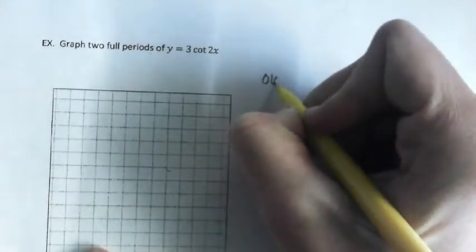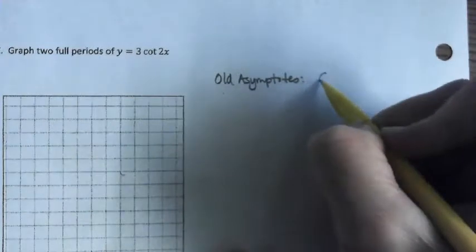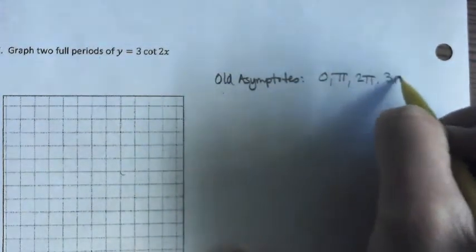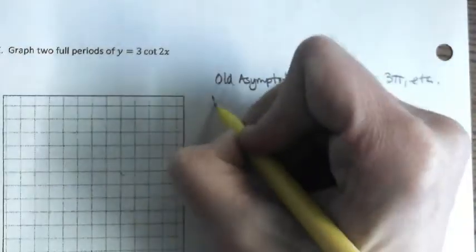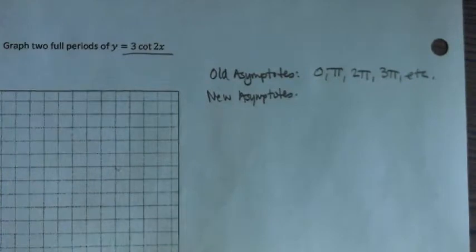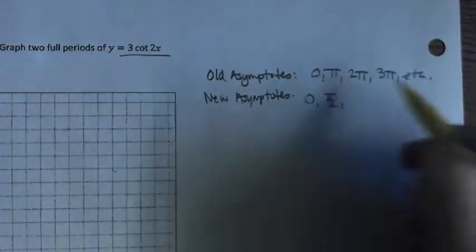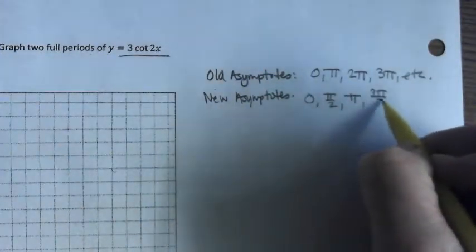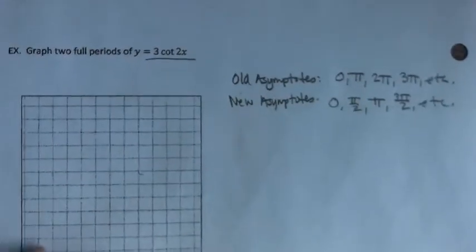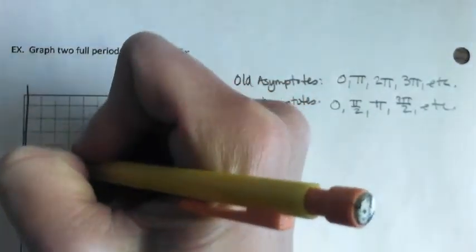Good, any questions there? Okay, for our cotangent graph, I'll start the same way. Our old asymptotes were where? Zero, pi, two pi, three pi, etc., right? Our new asymptotes are where? What is the horizontal stretch or compression that's going to affect our asymptotes? Compression by a half, so we're going to take half of all of these. So zero still zero, pi becomes pi over two, two pi cut in half becomes pi, three pi over two, etc.